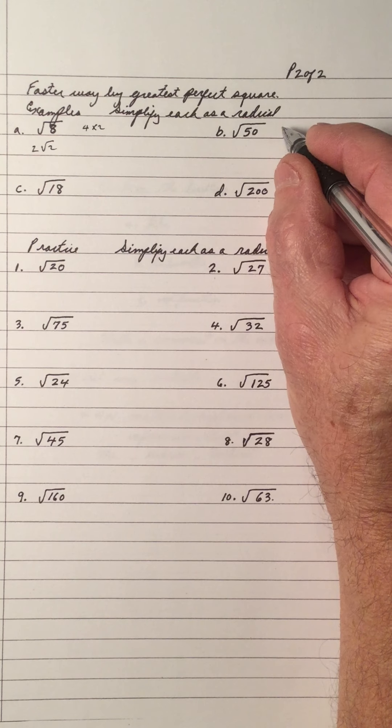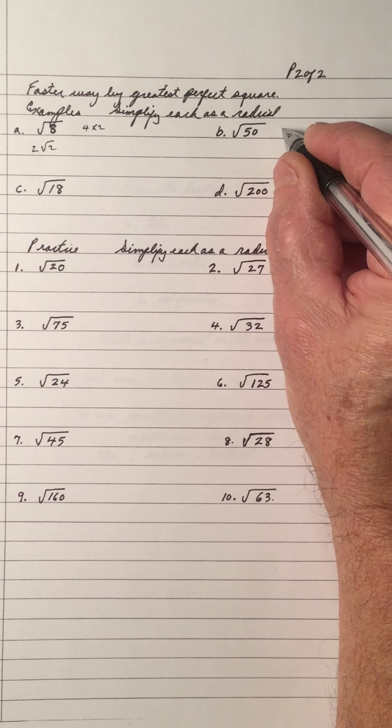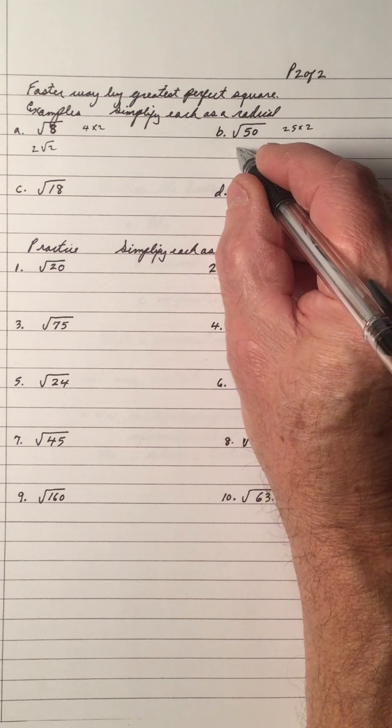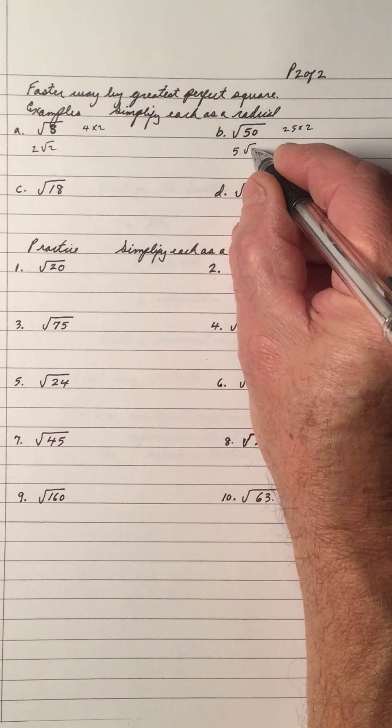50, the greatest perfect square is 25. 25 into 50 goes 2. The square root of 25 is 5 and you have a 2 left.